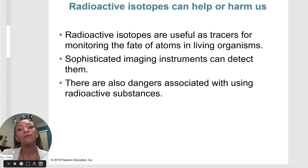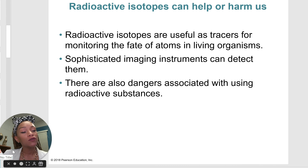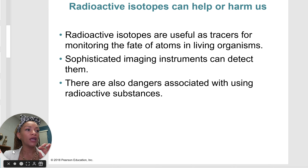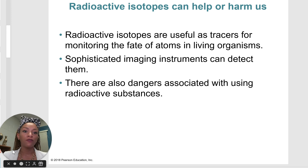We also have radioactive isotopes. As the name suggests, radioactive isotopes can be harmful to the human body, but they are useful as tracers for monitoring different atoms in living organisms. MRI machines can have you swallow something — usually a liquid dye with tracers in it — then imaging is done to see whether those tracers attach to something harmful. You just don't want too much of it.